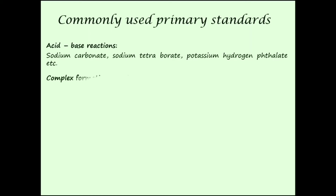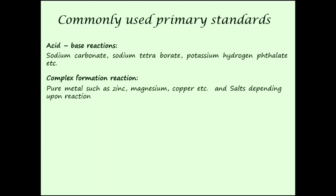Next, complex formation reactions — the titrimetric analysis based on this is complexometric titration. In complexometric titration, pure metals such as zinc, magnesium, and copper, and salts depending upon the reaction, are used as primary standards.